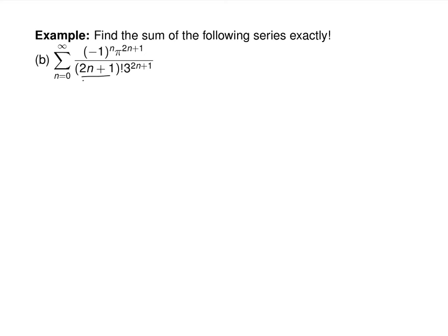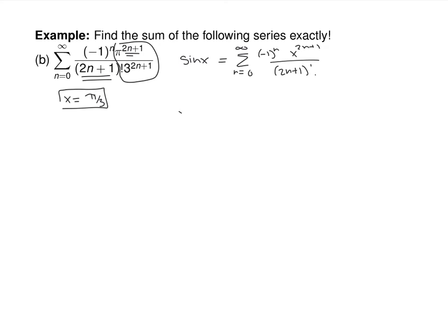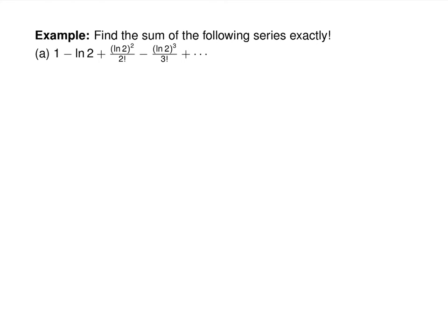If you see 2n plus 1 factorials in the denominator, that hints it's probably a sine series. Sine of x is the sum from n equals 0 to infinity of negative 1 to the n times x to the 2n plus 1 over 2n plus 1 factorial. If the series has pi over 3 to the 2n plus 1 in it, that's the sine series with x equals pi over 3 plugged in, so the sum equals sine of pi over 3. Looking at the unit circle, pi over 3 gives sine equal to root 3 over 2.